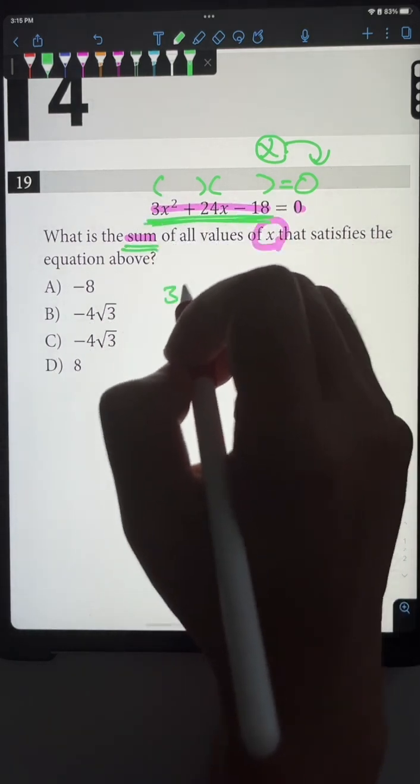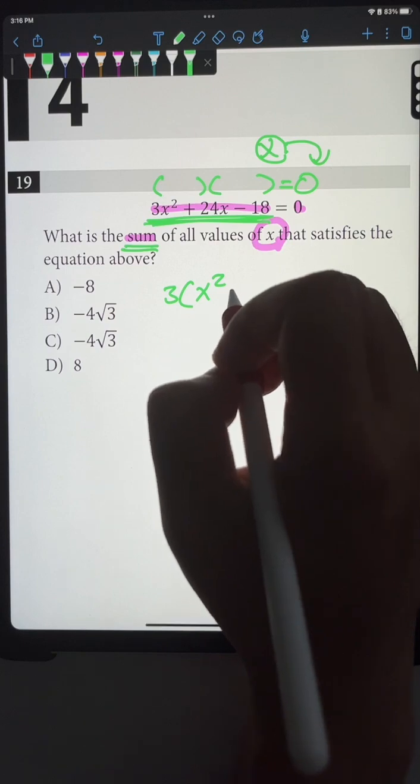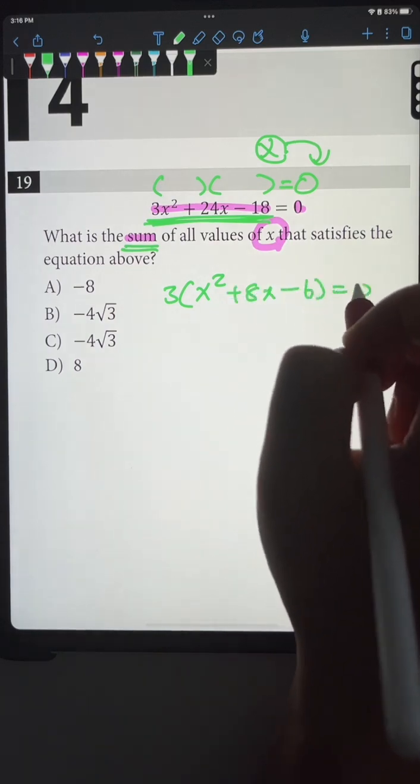So let's say we factor out the 3 and we're going to get 3x² + 8x - 6 = 0.